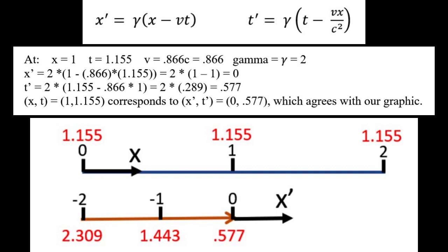Plugging into the other equation, t-prime equals gamma times t minus vx over c squared. So t-prime equals gamma 2 times the time t 1.155 minus vx over c, v is 0.866, x is 1, and do the arithmetic on that and it comes to 0.577 which is indeed what the time is in the prime frame. So the correspondence is the transformation is x and t of 1 and 1.155 corresponds to x-prime t-prime of 0, 0.577, which is exactly what we see in our graphic.